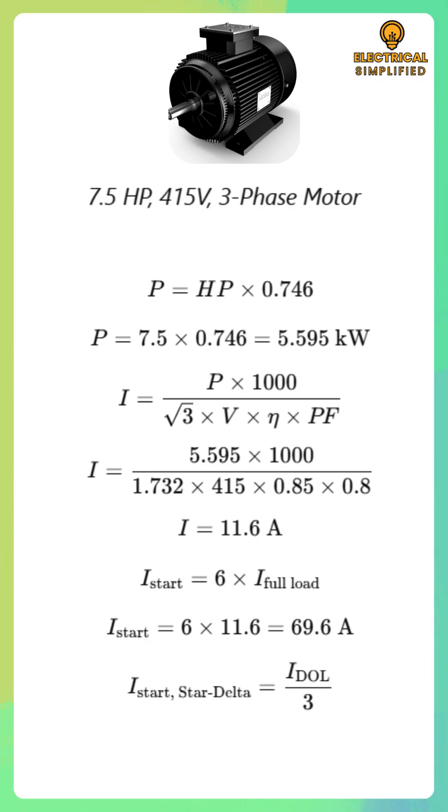In a star delta starter, the starting current is reduced to one-third of the direct online starting current. So, if the direct online starting current is 70 amperes, then the star delta starting current will be around 23 amperes.